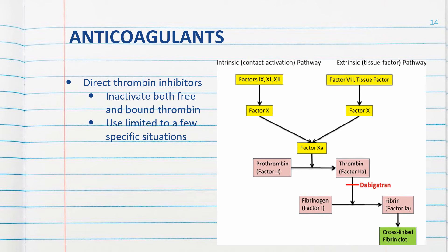Another pharmacologic therapy is the direct thrombin inhibitors. They are advantageous in that they inactivate both free and bound thrombin. However, the FDA currently limits the use of these drugs to a few specific situations. Argatroban is given to patients undergoing percutaneous coronary interventions as well as patients at risk for thrombocytopenia related to heparin therapy. Dabigatran is given to patients with atrial fibrillation. We can see where dabigatran has its effect in the liver associated with our intrinsic and extrinsic pathways.